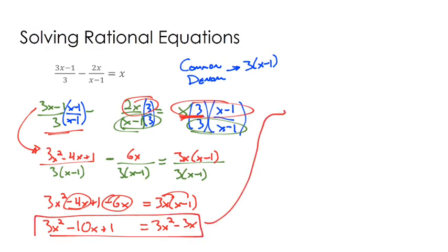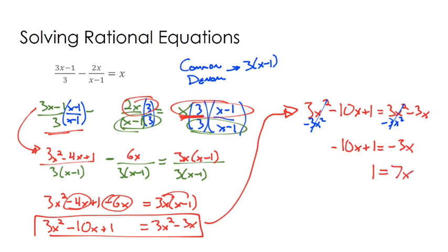So I'm going to come up here where we've got a little bit more space, and we are almost there. So I have 3x squared minus 10x plus 1 equals 3x squared minus 3x. The beautiful thing about this is once I subtract 3x squared from each side, it's no longer quadratic, and that's going to make life really easy. Negative 10x plus 1 equals negative 3x. I'm going to add 10x to each side, and then I'm going to divide by 7 on each side. And we get one solution to this equation. It's the x equals 1 7th.